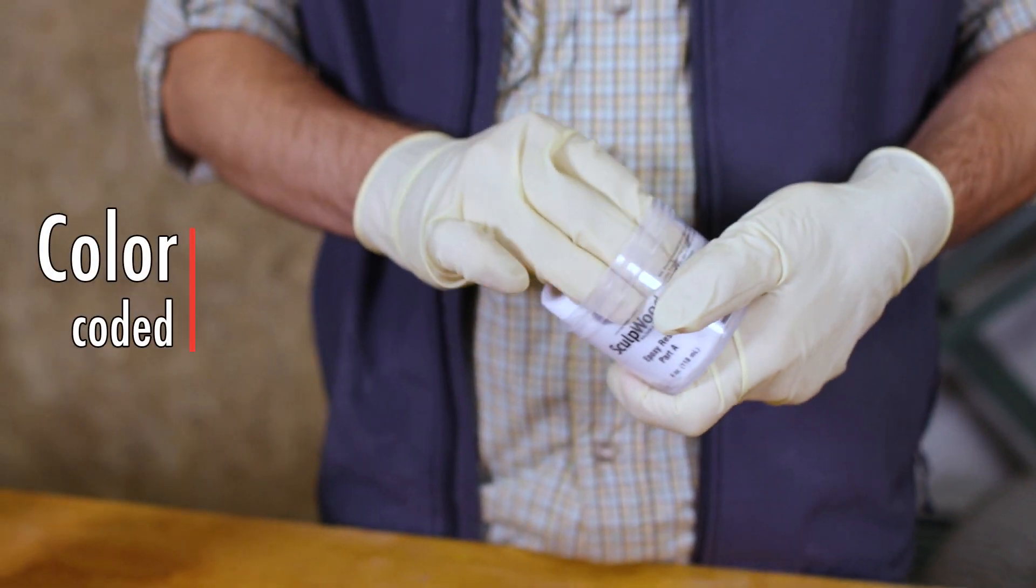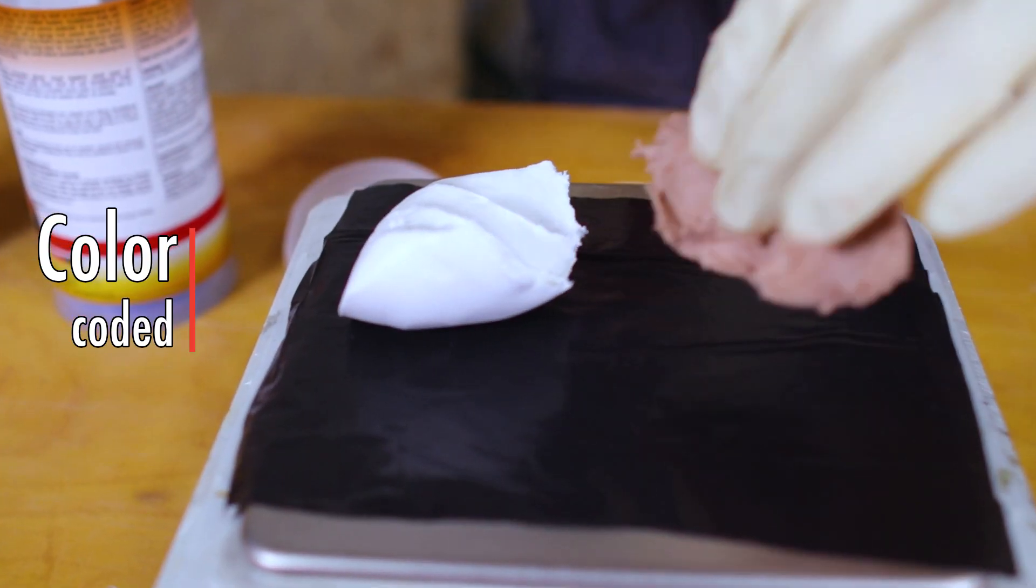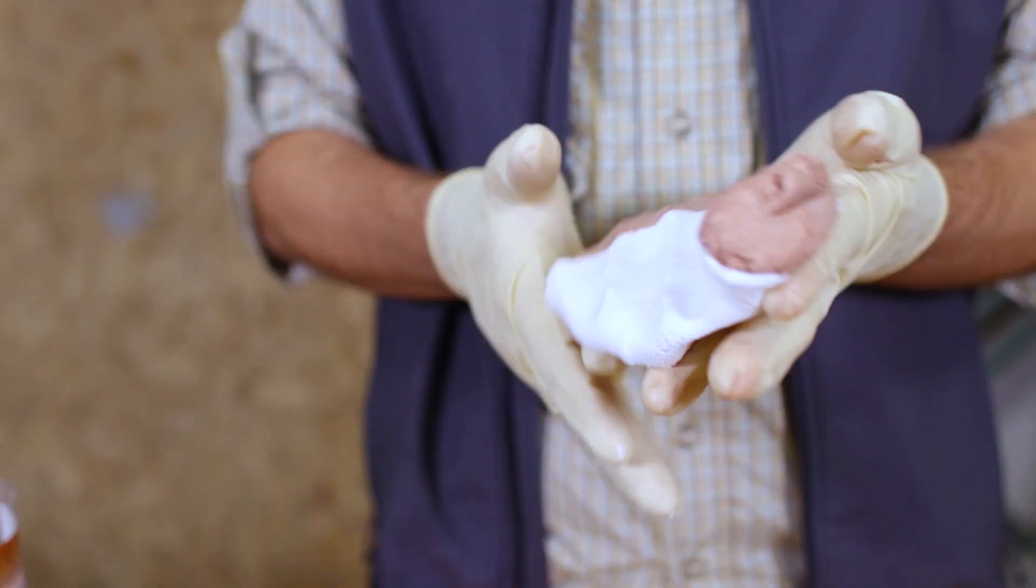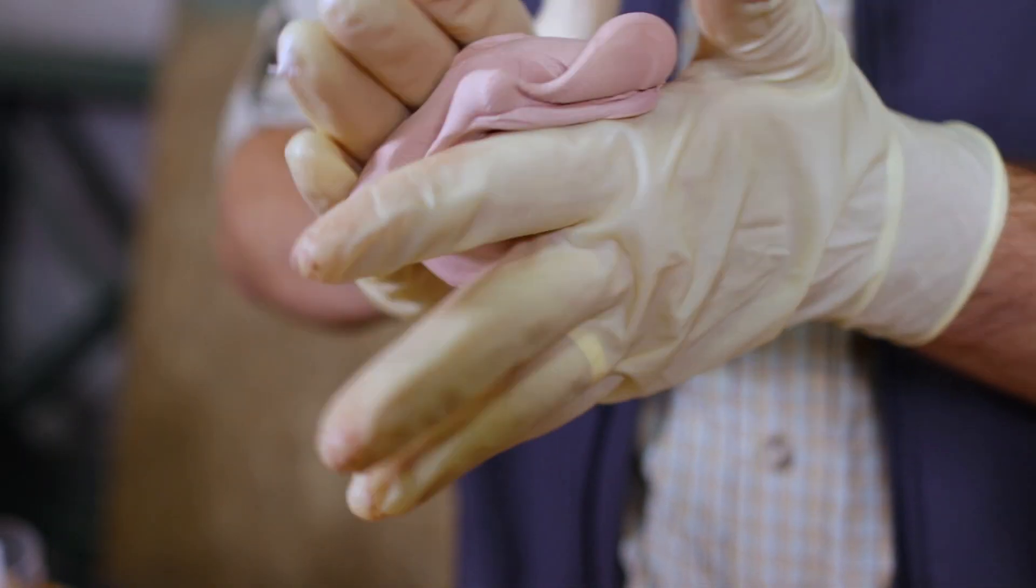Our putties and pastes are color-coded. That is, the parts A and B are different colors. You'll know you have a thorough mix of these products when you can no longer see streaks in your mixture.